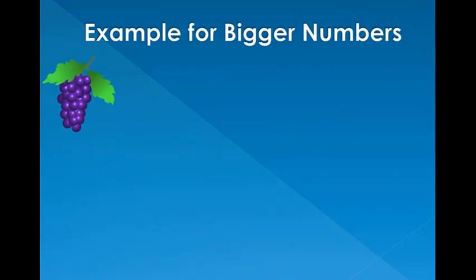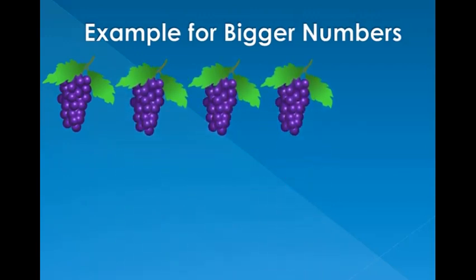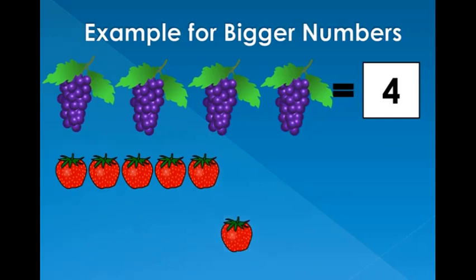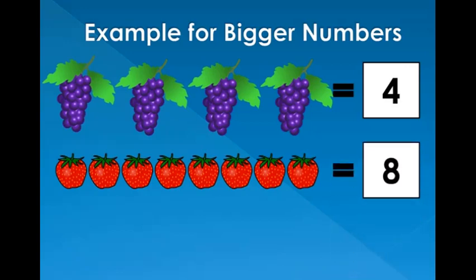1, 2, 3, 4. There are four bunches of grapes. 1, 2, 3, 4, 5, 6, 7, 8. There are eight strawberries. Children, can you see the number of strawberries are more than the number of bunches of grapes? So we understand that eight is a bigger number than four.